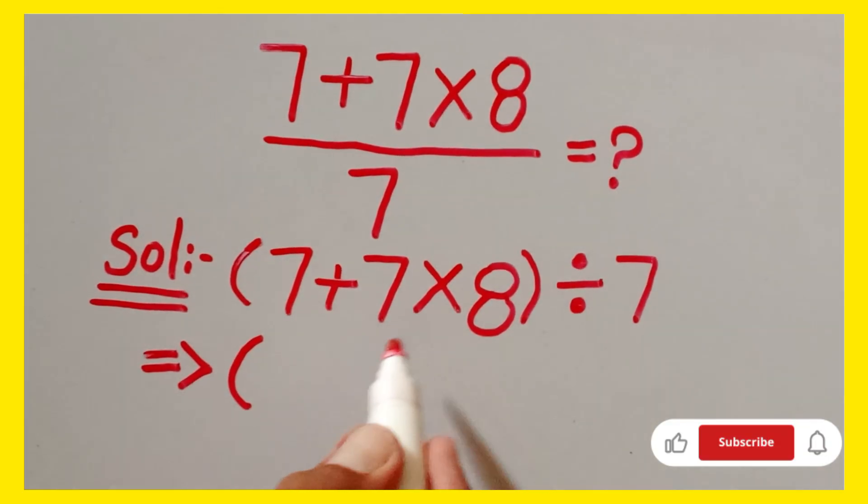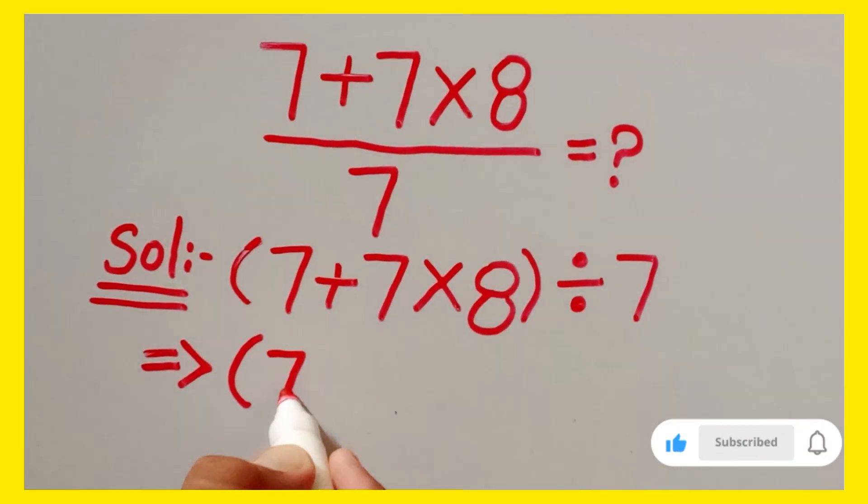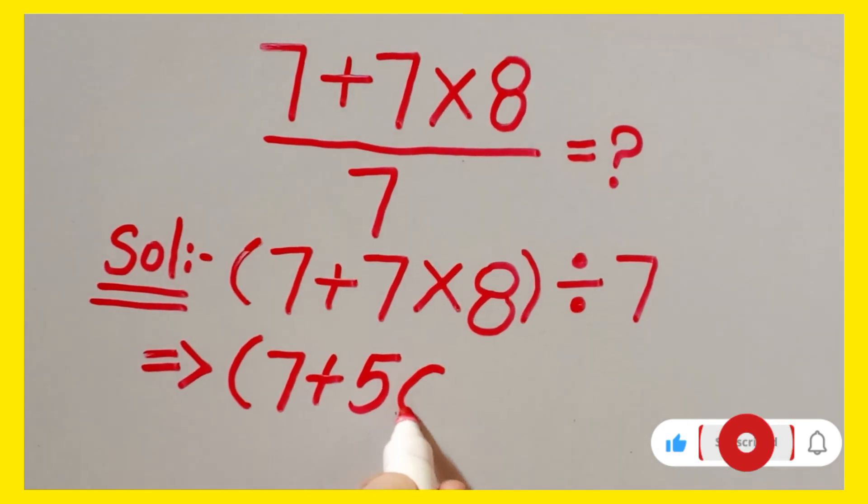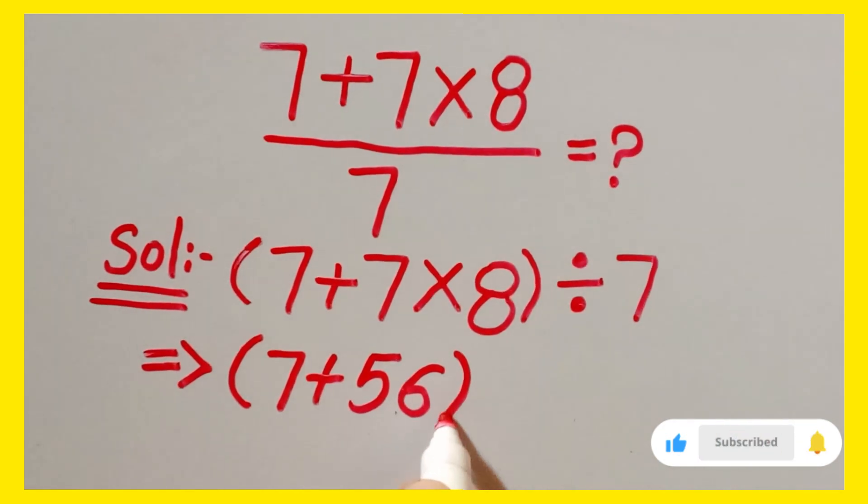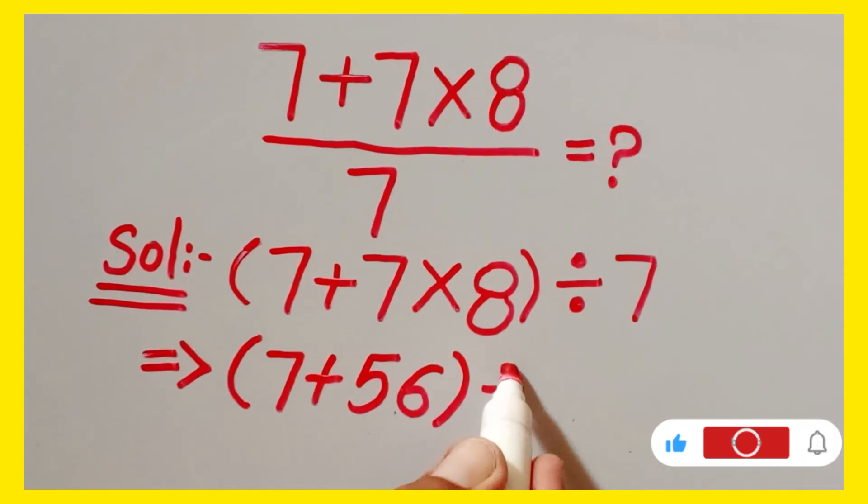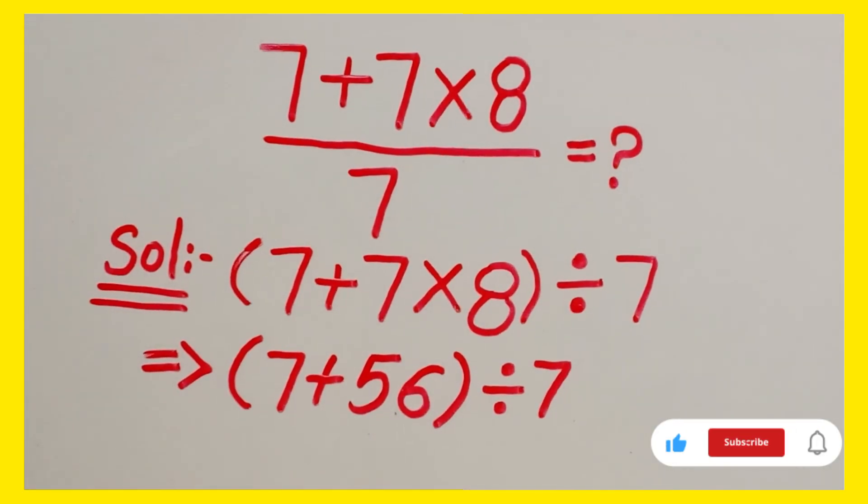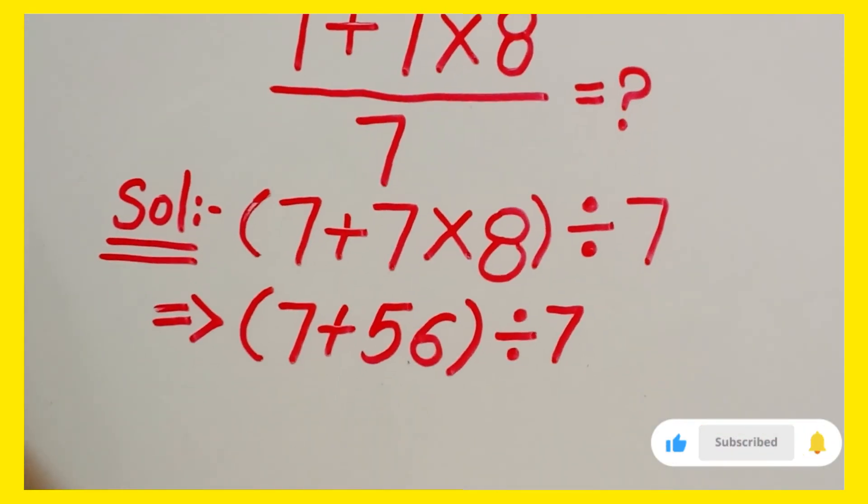So firstly we can follow multiplication so 7 plus 8 times 7 which is equal to 56 divided by 7. Okay guys, now in next step.